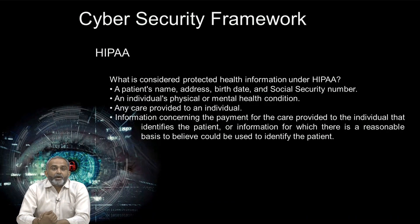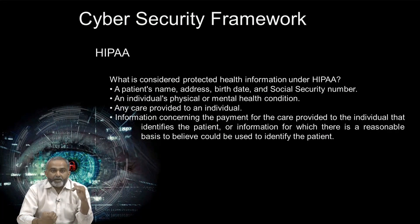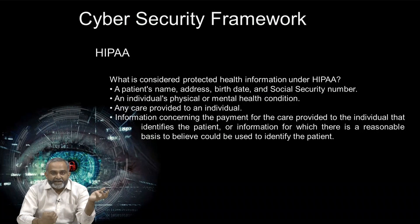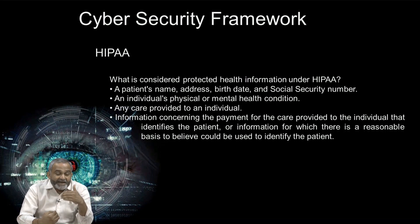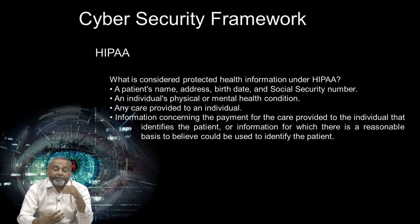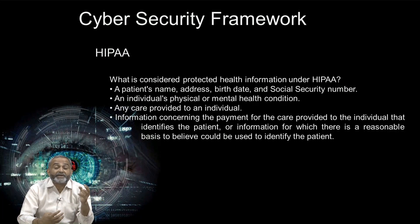What is considered protected health information under HIPAA? This includes the patient name, address, date of birth, social security number (or in India, Aadhaar card number), the individual's physical and mental health condition, treatment history, information concerning payment for care provided to the individual or to the hospital that identifies the patient, or information for which there is a reasonable basis to believe could be used to identify the patient. Treatment-related information is also important under HIPAA compliance, and none of the organizations having this kind of detail can disclose this information without the written consent of the patient.